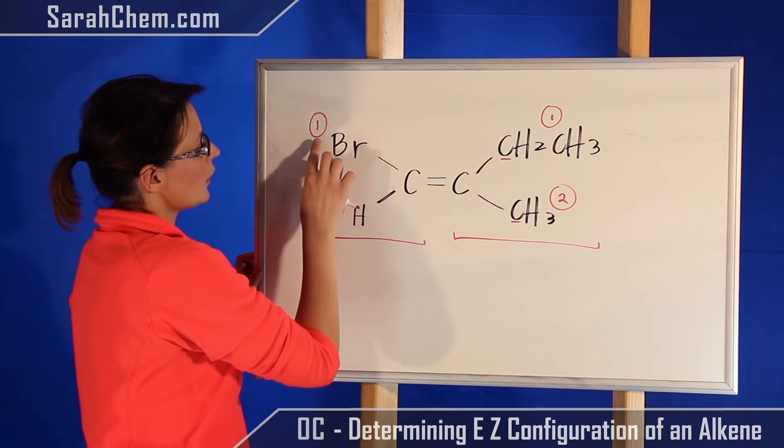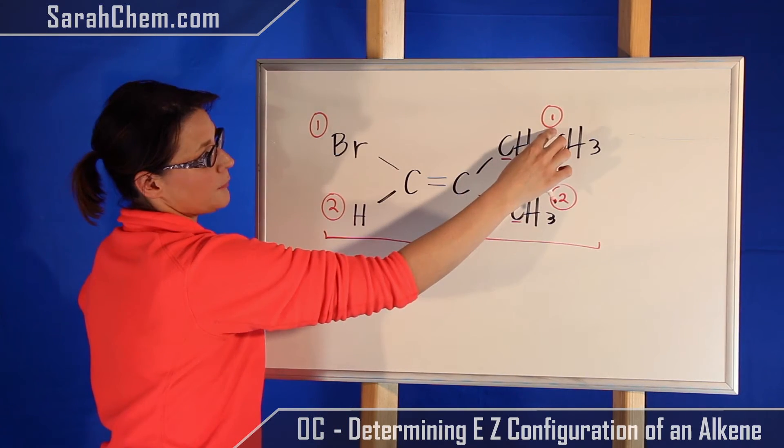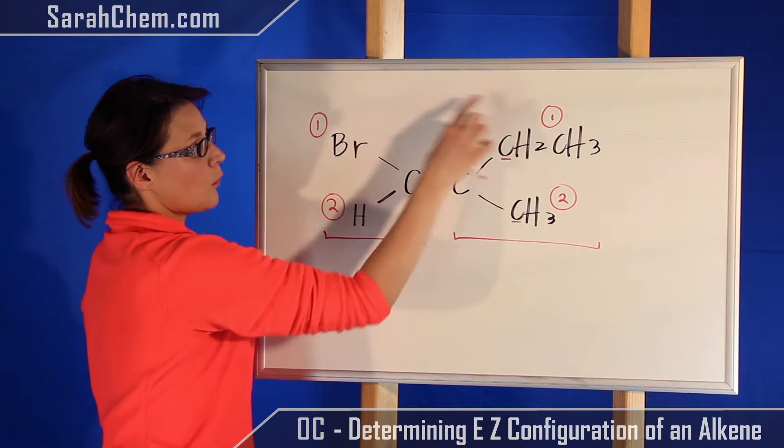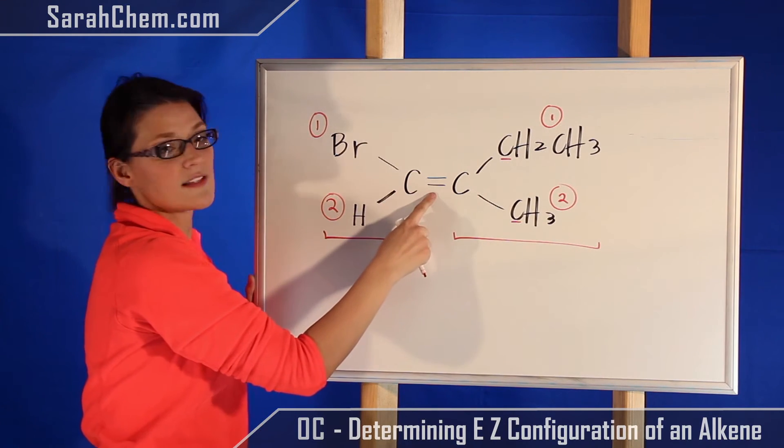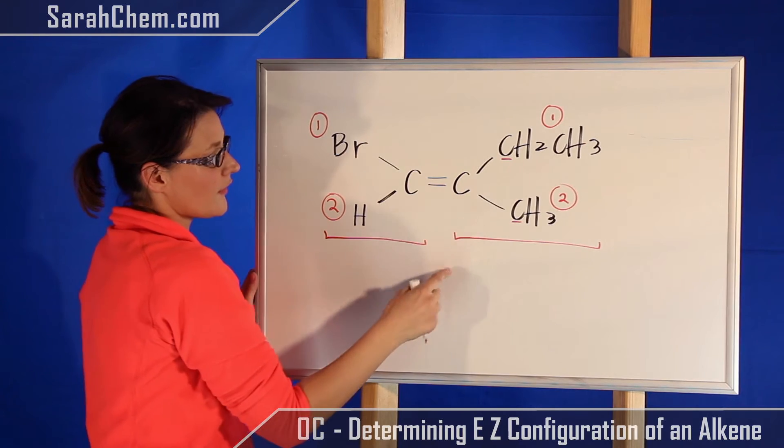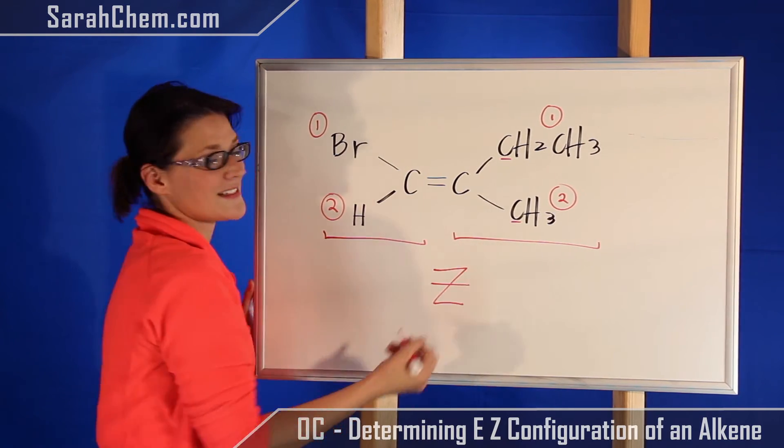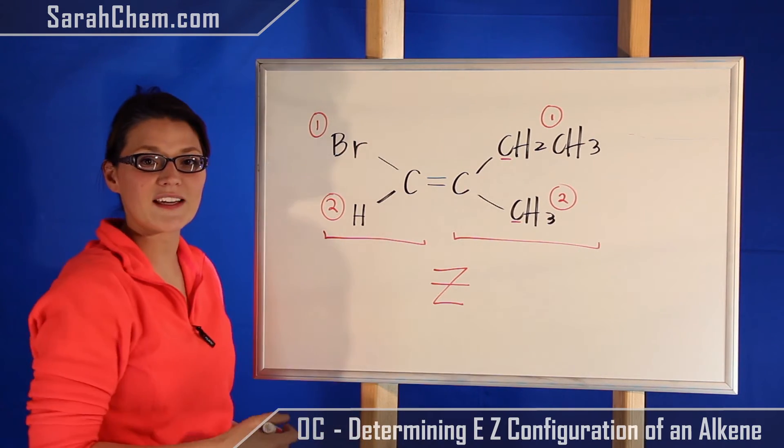The next step would be to see where the priority ones on each carbon are relative to one another. So this carbon's priority one is up here, this carbon's priority one is over here, so these priority ones are on the same side as one another relative to this double bond. So we know then that this would be a Z isomer. Let's take a look at another example.